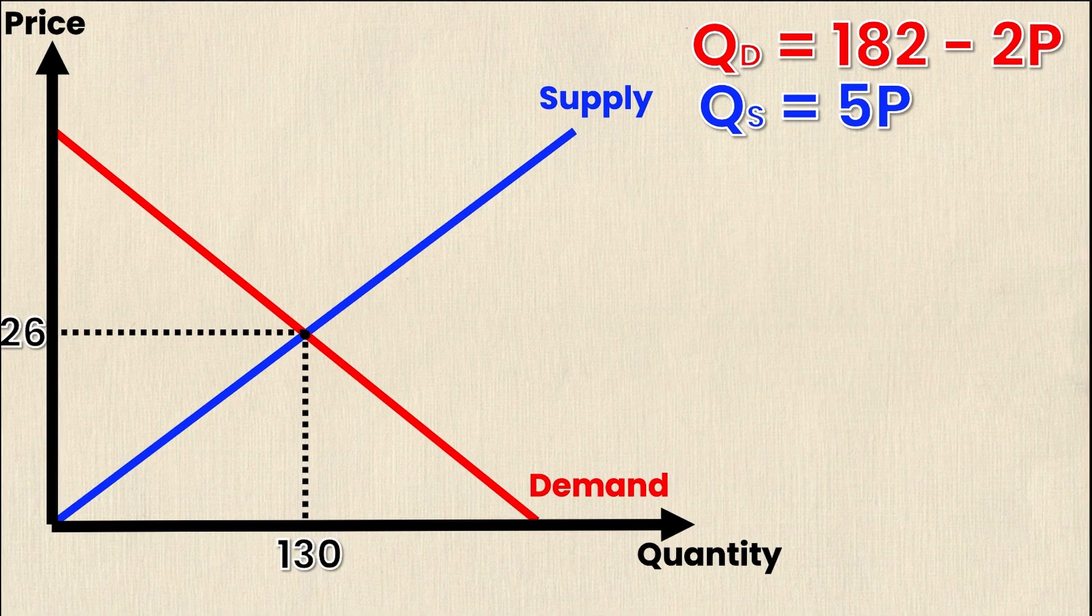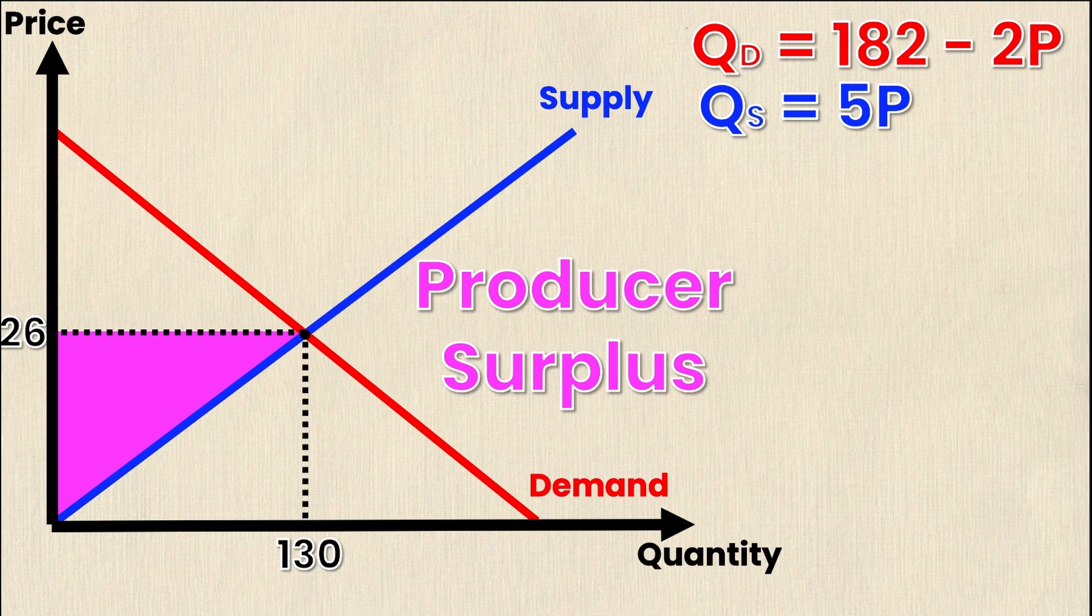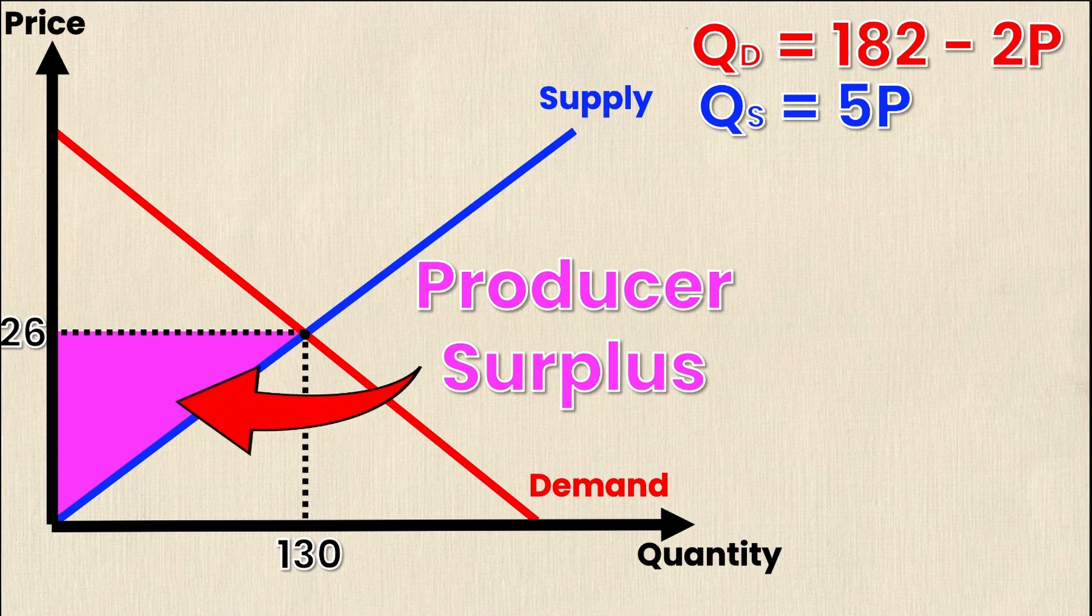So as you may know and if you don't know now you know the area above the supply curve and under the selling price is noted as producer surplus. So you can see it's this triangle right here. As you see the equilibrium price is 26 it's below that price level but it's above the supply curve and so if I want to know how much producer surplus is all I need to do is calculate the area of this triangle. Sounds easy right?